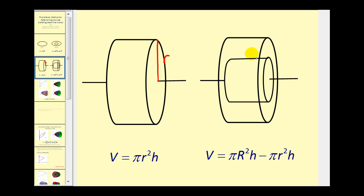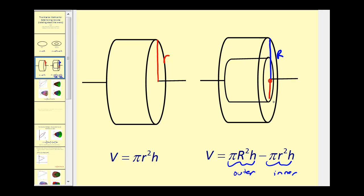For the washer method we'll have a hollow disk. To determine the volume of a hollow cylinder, we'd take the volume of the larger cylinder minus the volume of the smaller cylinder. This would be the volume of the outer cylinder and this would be the volume of the inner cylinder, where this distance would be big R, this distance would be little r, and the height would be this distance here. We'll combine this idea with integration to determine the volume of the solid formed by rotating an area about the x-axis.